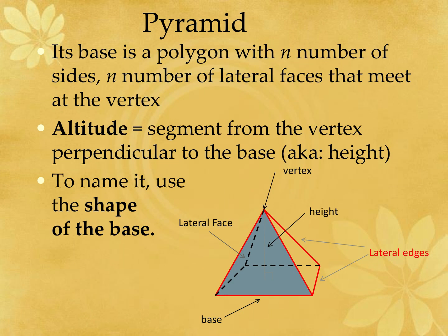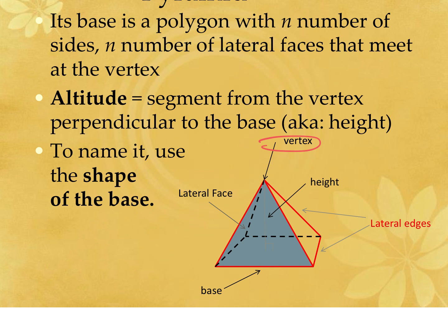For the pyramid, we again name it based on the shape of the base. It's a polygon with n number of sides and n number of lateral faces that all meet at a vertex. The altitude is the segment that goes from the vertex perpendicular to the base — it goes straight down the middle of the pyramid. We'll also see slant heights, which are the heights down the sides of the lateral faces.